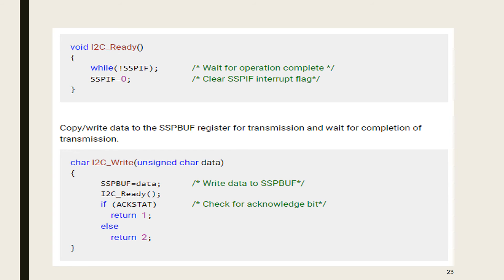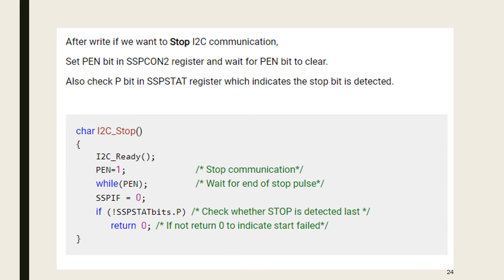After the write, check ACKSTAT: return 1 if acknowledgement was not received, else return 2. To stop I2C communication, set the PEN bit in SSPCON2 and wait for PEN to clear. Check the P bit in SSPSTAT register to verify whether the stop bit has been detected. In the stop routine: set PEN to 1, wait while PEN is set, then check SSPSTAT bits P — if stop bit is detected last, return 0.